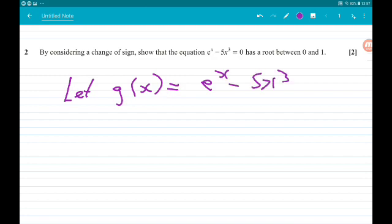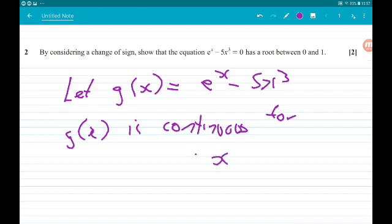The first thing we can say is this function is continuous in the interval. So g(x) is continuous for 0 ≤ x ≤ 1.